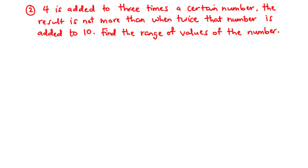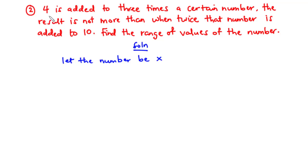Question 2: 4 is added to 3 times a certain number; the result is not more than when twice that number is added to 10. Find the range of values of the number. Since we don't know the number, we represent it with x. So let the number be x. We have 4 added to 3 times x — so 3x + 4 — and this is the result we are working with.